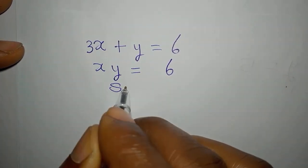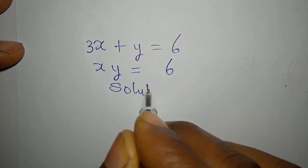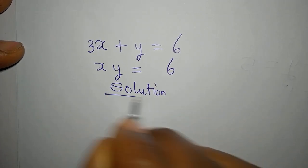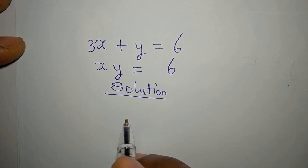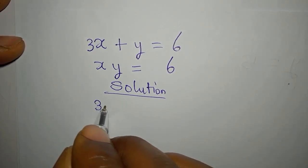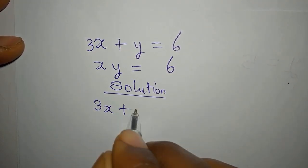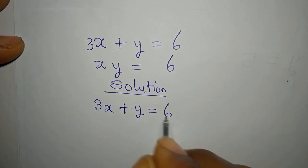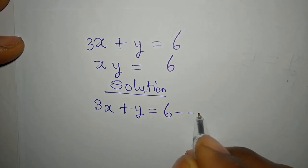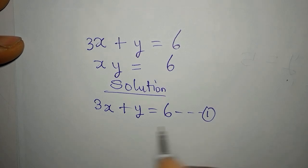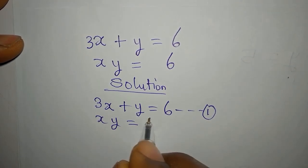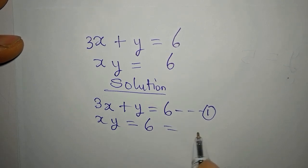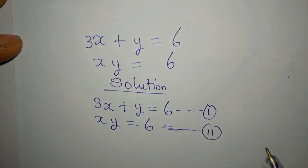Hello everyone, let's provide the solution to this very quickly. 3x plus y equals 6 — this is our equation 1. Then x times y equals 6 is our equation 2.